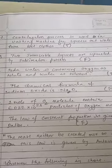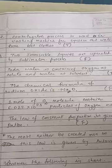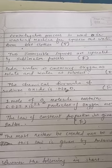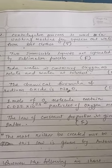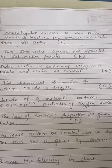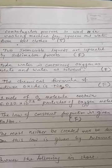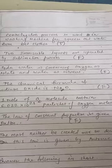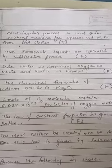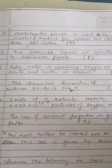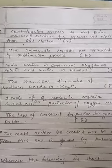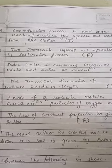The chemical formula of sodium oxide is NaO — that is false, because the correct formula is Na₂O. Two sodium atoms are required to combine with one oxygen atom.